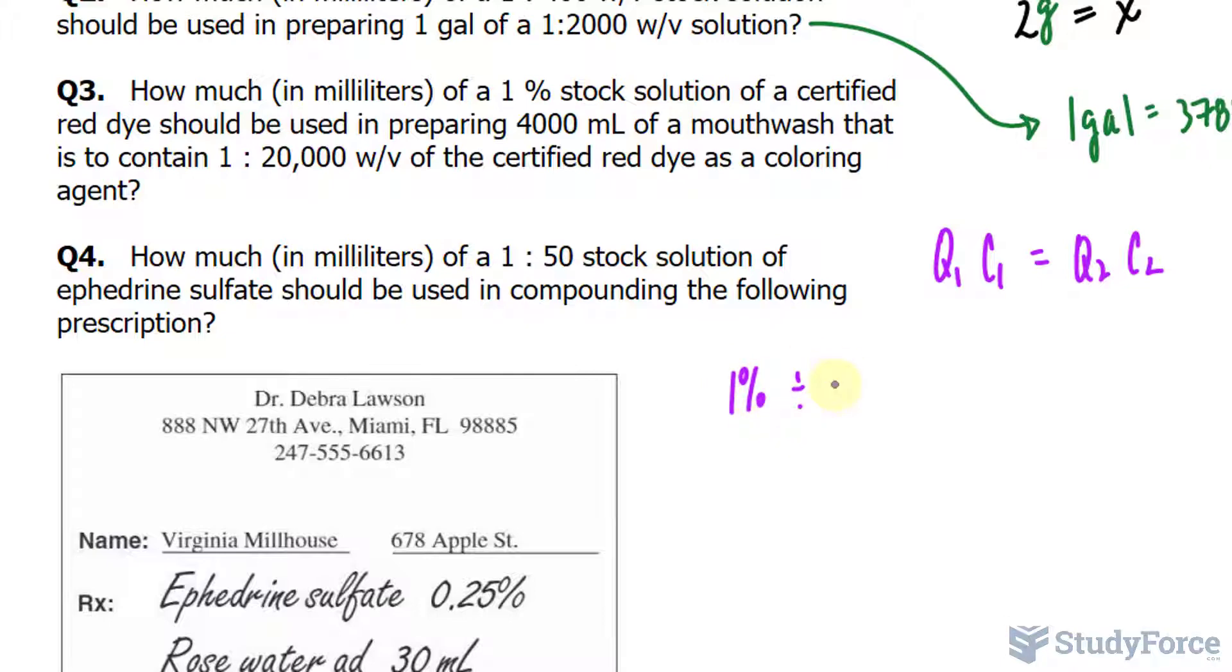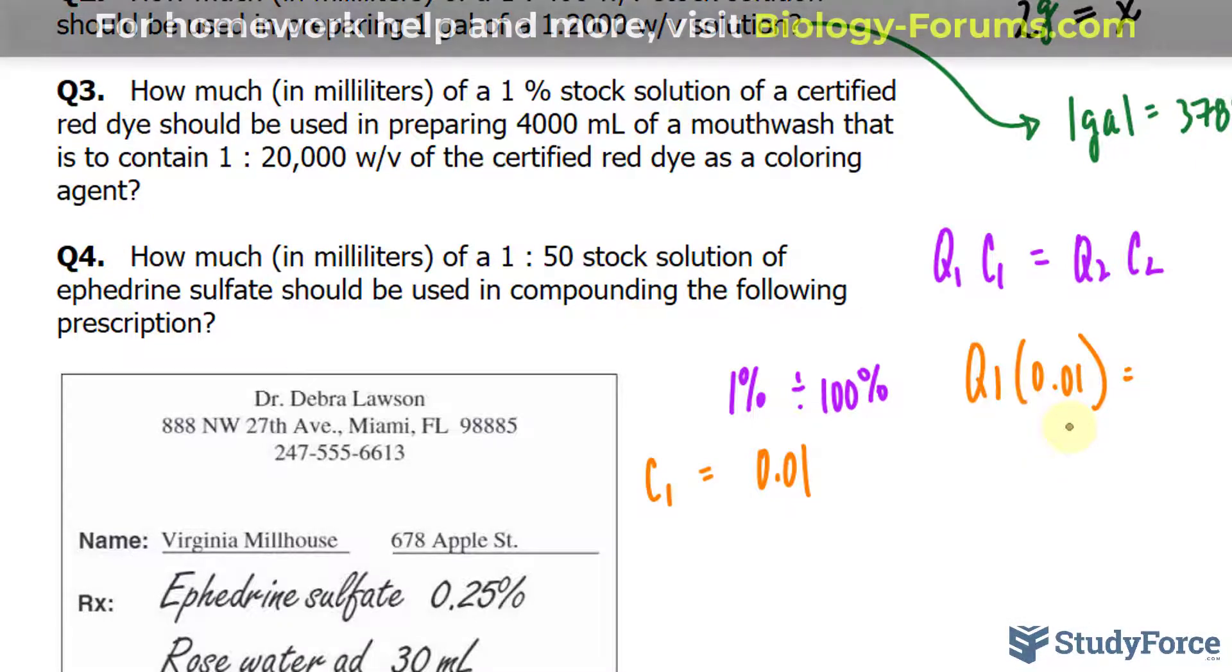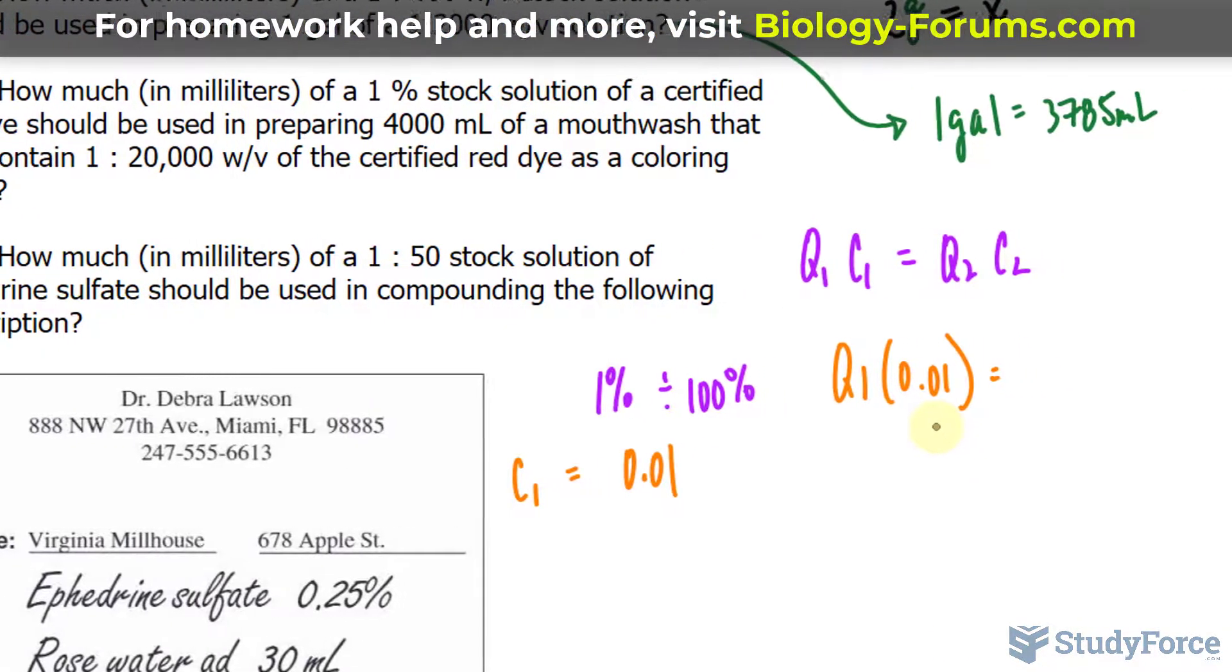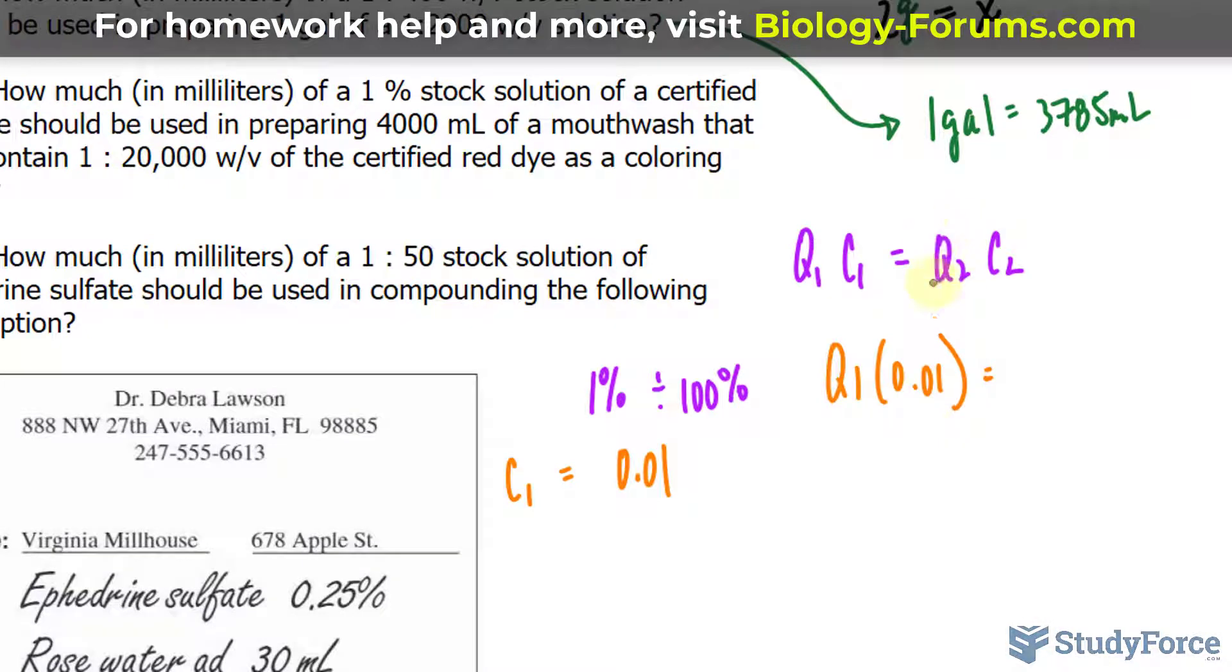I'll take this value and substitute it into C1, 0.01. And on the right side of the equation we've been told the final volume, which will go under the quantity of the final solution being 4,000 milliliters and its concentration is 1 in 20,000.